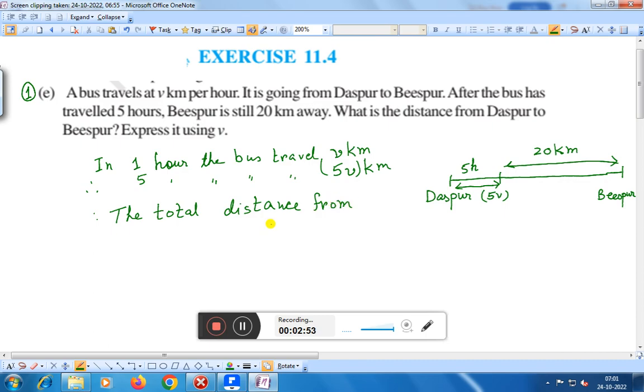The total distance from Daspur to Bispur is equal to 5V plus 20 kilometers. This is the solution.